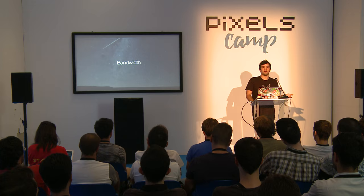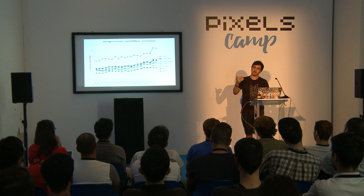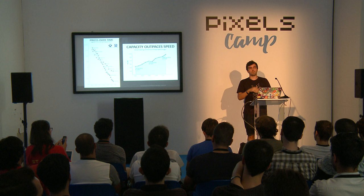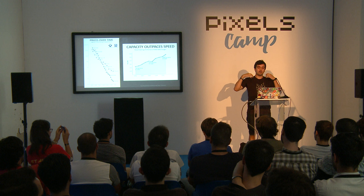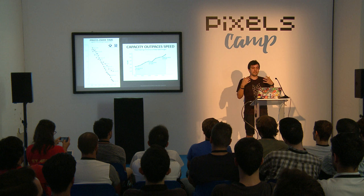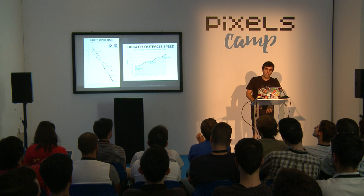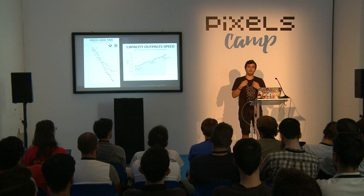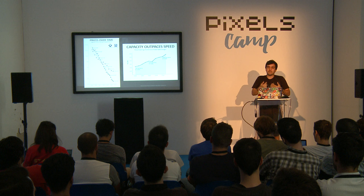There's also the bandwidth problem. Bandwidth is not necessarily increasing — the average keeps being the same — while the prices of storage are decreasing and we're creating more data. Now we have 4K video; a couple of years ago we had 1080p. Everyone wants access to all these things at the same time. If storage cost decreases and bandwidth stays still, the internet will look very slow in a couple of years because the network doesn't have enough bandwidth to cope with all the people watching these videos.